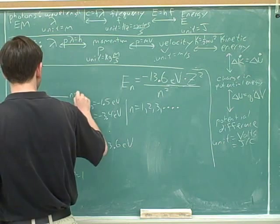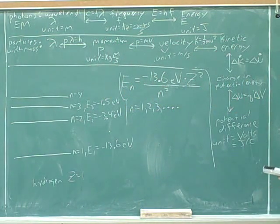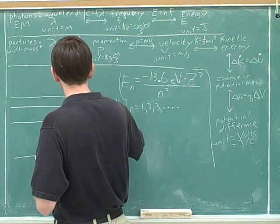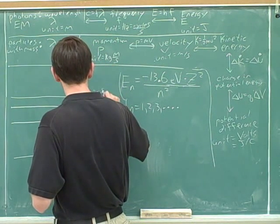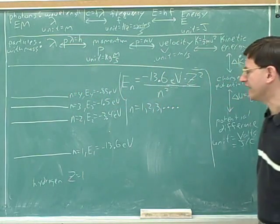Let's do one more level. N equals 4. Negative, OK. All right.